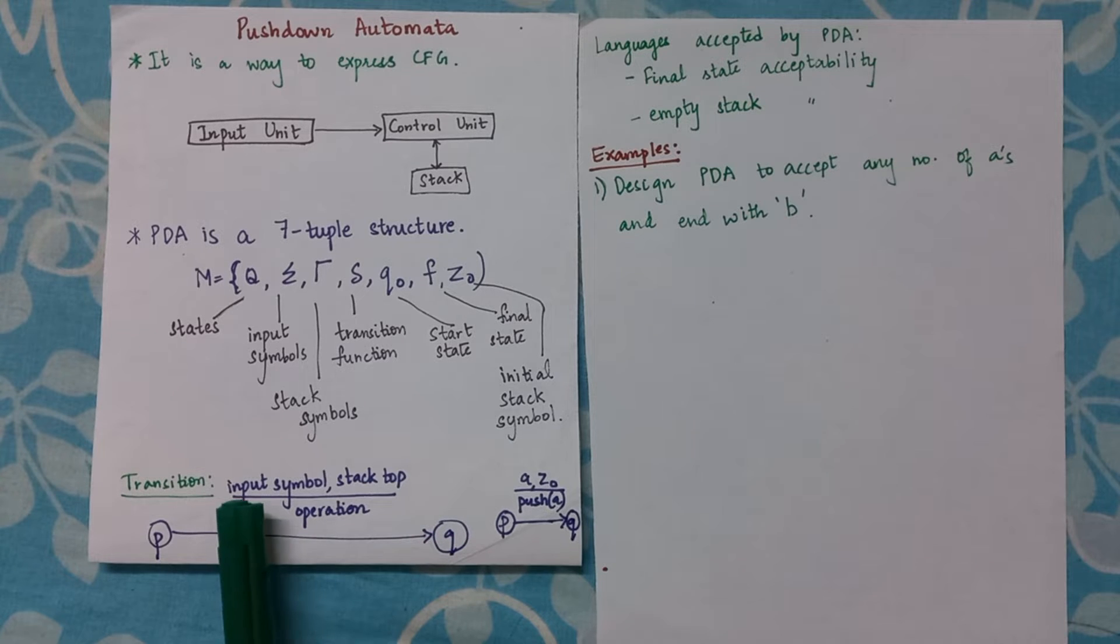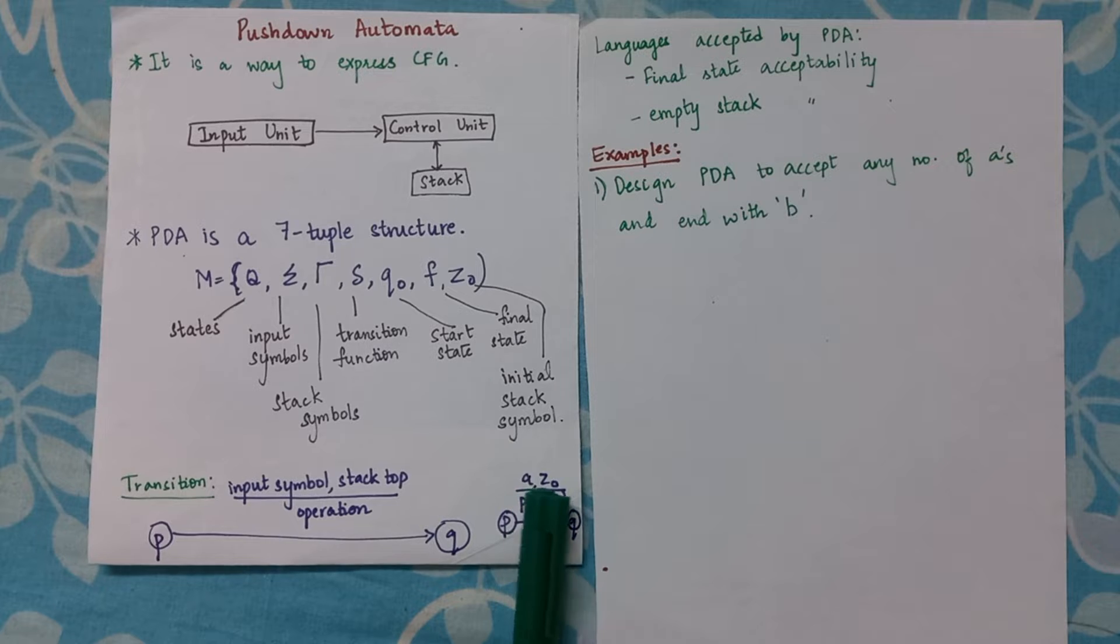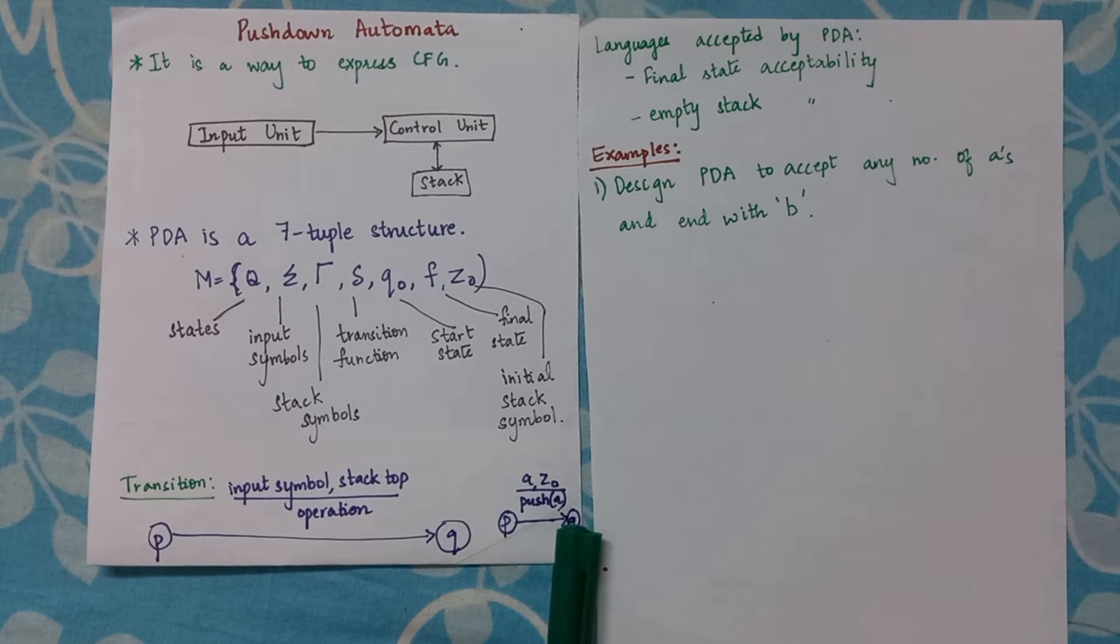So if there are two states and I want to show the transition, then I should specify what input symbol, with what stack top, and what operation has to be done. For example, if the input symbol is 'a' and the stack top is Z0, push 'a' onto the stack.